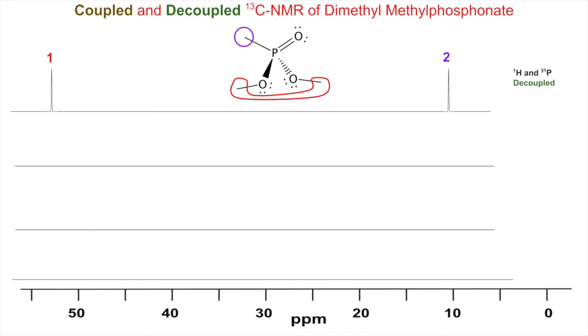We're going to label that one on the left as one and that's two. I color-coded it—the two methyls on the oxygens are the carbons shown more downfield, and the purple one is the methyl that's more upfield at about 10 parts per million.